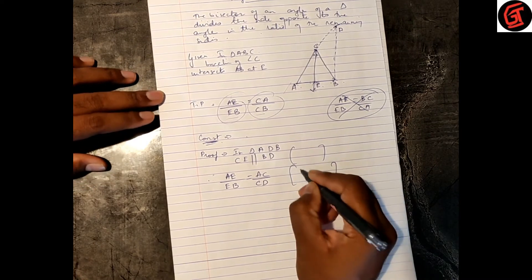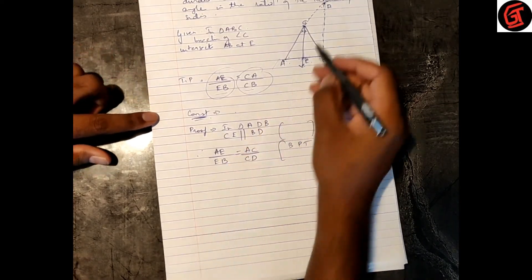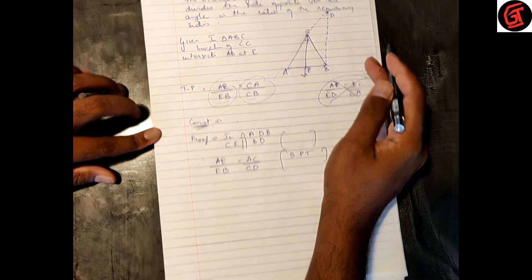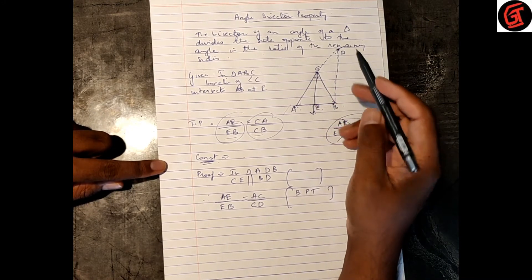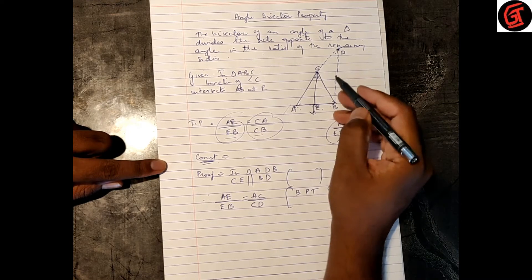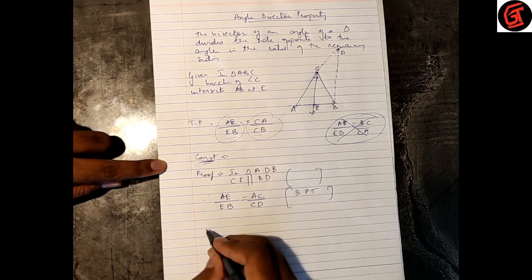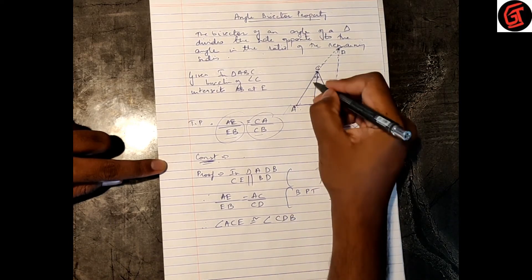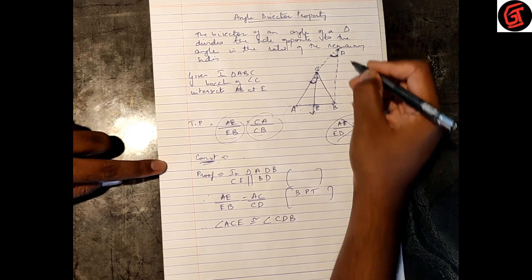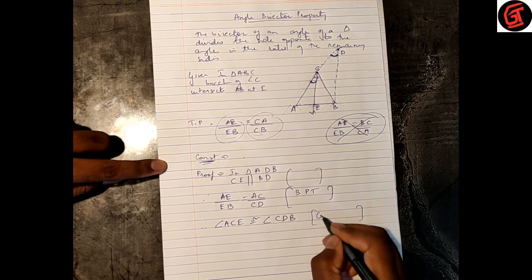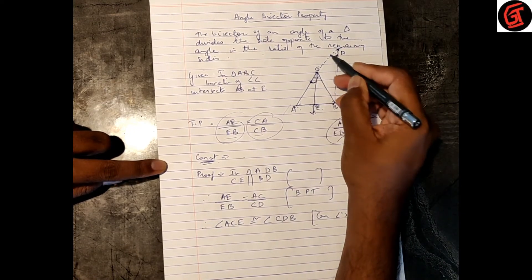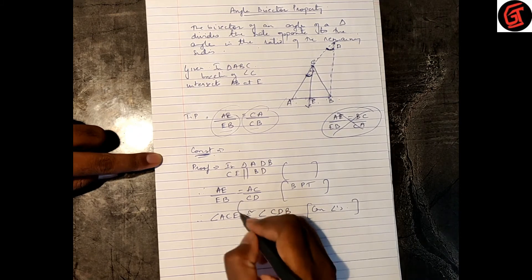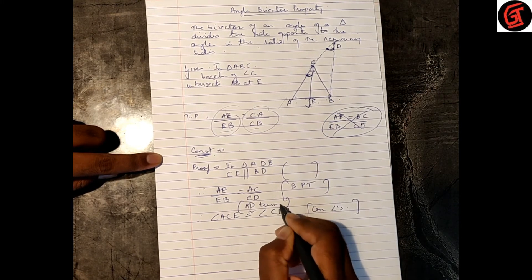CE is parallel to BD. Taking AD as the transversal, angle ACE is congruent to angle CDB by corresponding angles, since CE is parallel to BD.